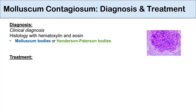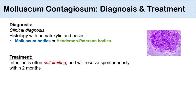Treatment of molluscum contagiosum is often conservative. The infection is often self-limiting and will resolve spontaneously within two months in immunocompetent individuals. However, in individuals who are immunosuppressed, the infection may last longer and can even persist for years — three to five years in some cases. In cases where the infection is recurrent or prolonged, we may use treatment.